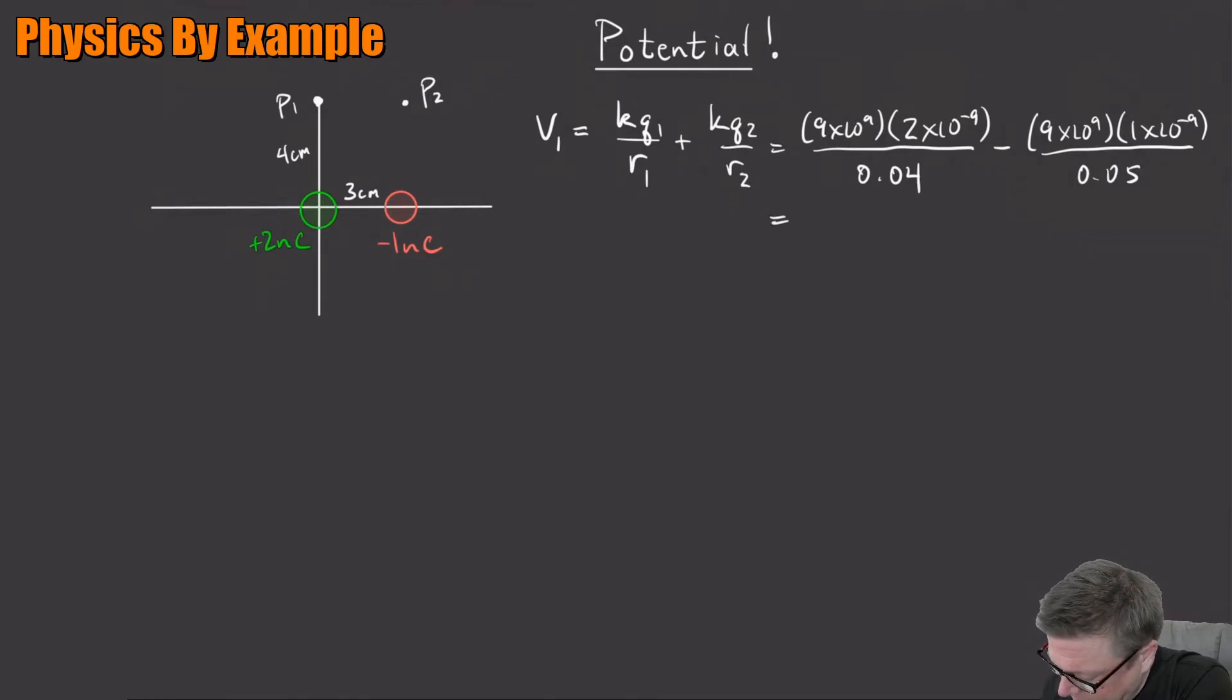And what do I get? 18 divided by 0.04. What is that going to be? Let's see. You plug these in. You get 450 volts minus, what's that? 9 divided by 180 volts. So at P1, the voltage, the potential at P1 is 270 volts. Easy, right? No components. That's really cool.